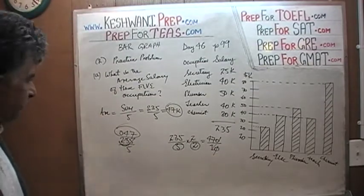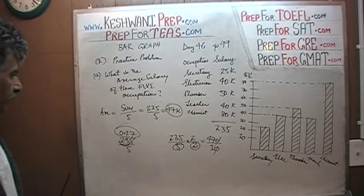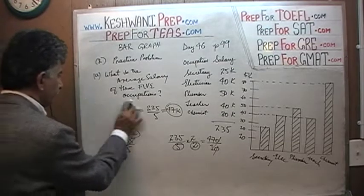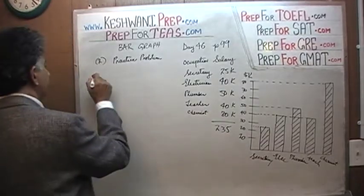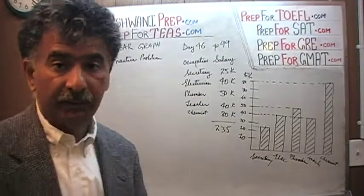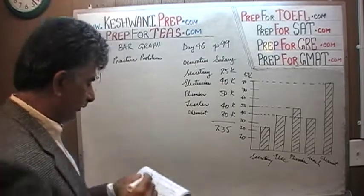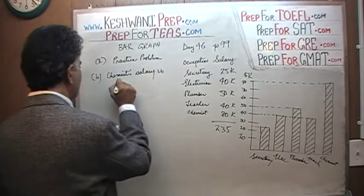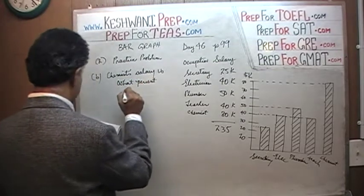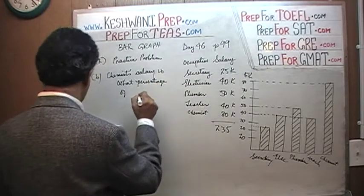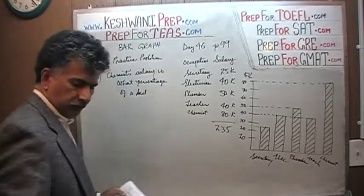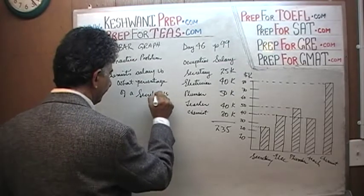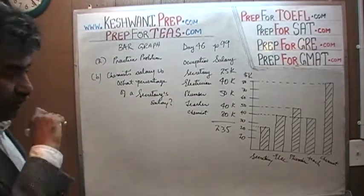Let's move on to Part B. The average was $47,000. The second conclusion we want to draw — and of course there are an infinite number of conclusions you can draw here, they just want you to make some observations. The next question is: the chemist's salary is what percentage of a secretary's salary?